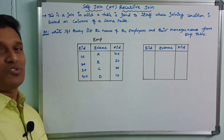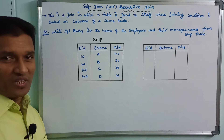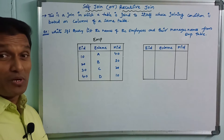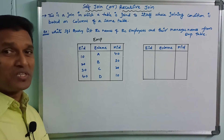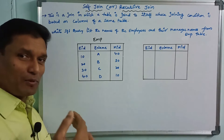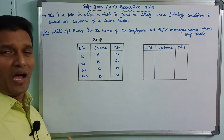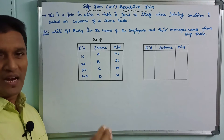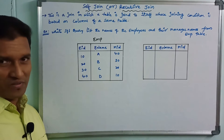Self-Join, also called Recursive Join, is used in this situation. We treat the same table as if it were two separate tables — but it is the same table.